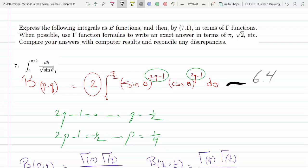That's fairly straightforward. I could just rewrite this as sine θ to the minus half dθ from 0 to π/2.